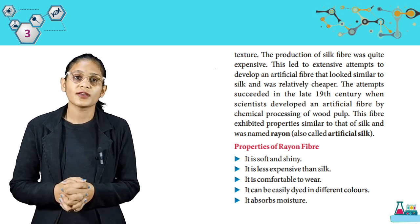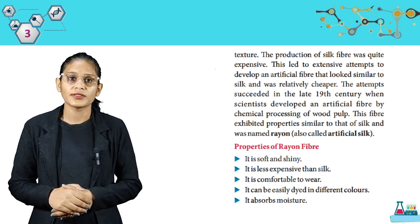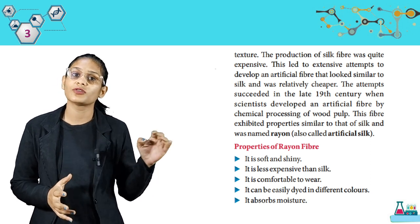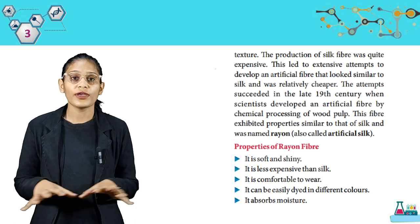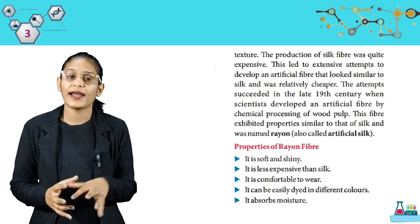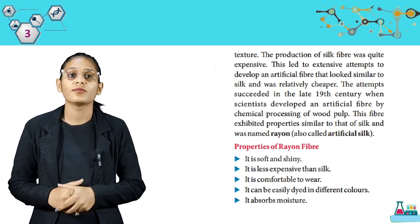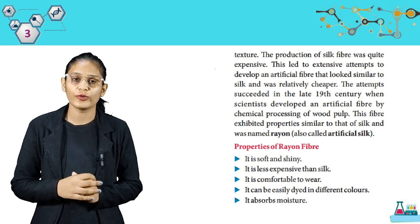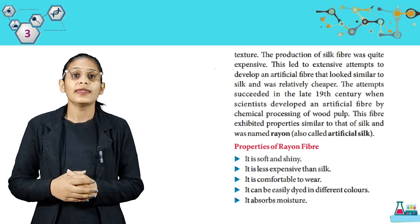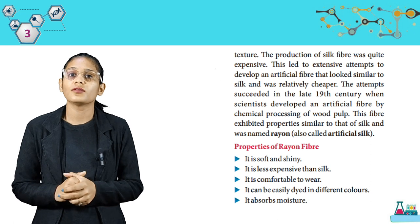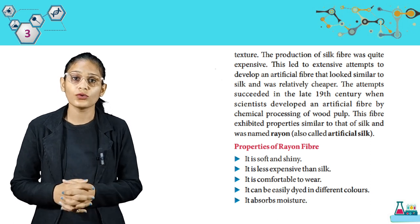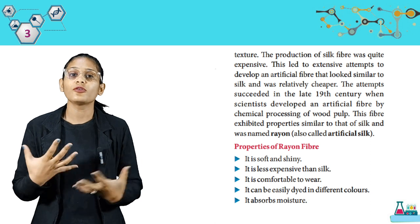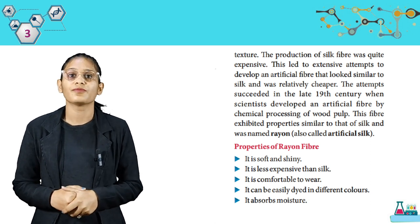So students, synthetic fibers are man-made fibers. Many units joined together are called a polymer. The single unit is called a monomer. Rayon is artificial silk, which is made from wood pulp — that means it is made from the polymer of cellulose.